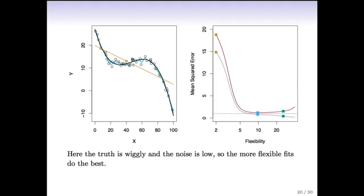Finally, here's a quite wiggly true function on the left. The linear model does a really lousy job. The most flexible model does about the best. The blue and green models are pretty close together in terms of mean squared error on the test data.